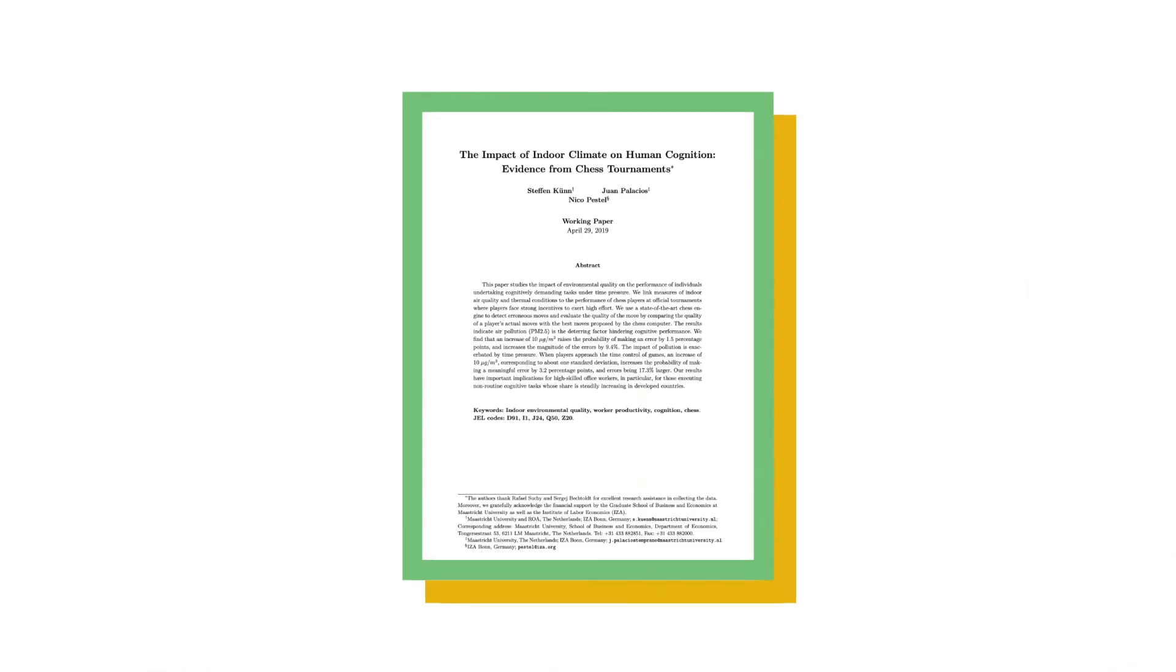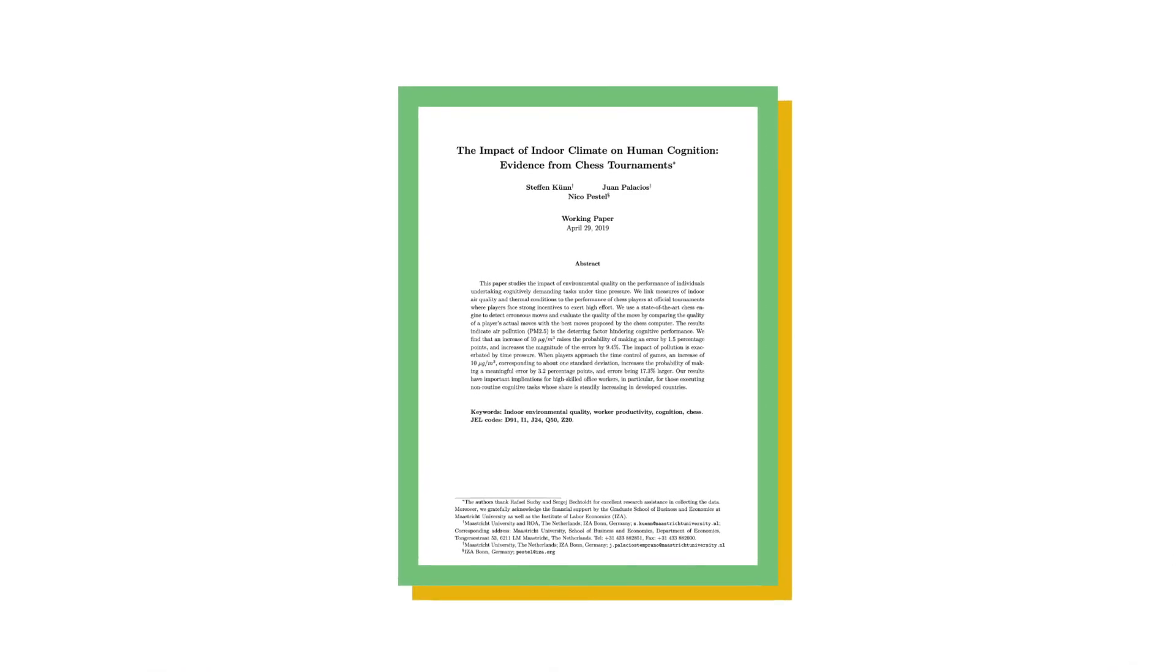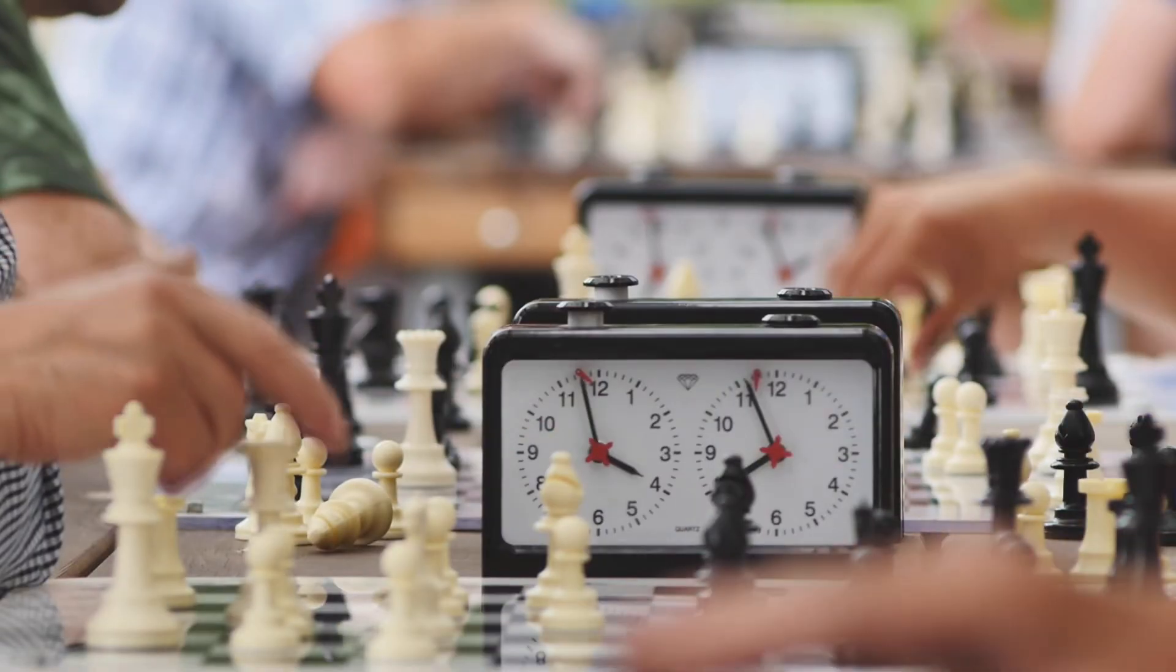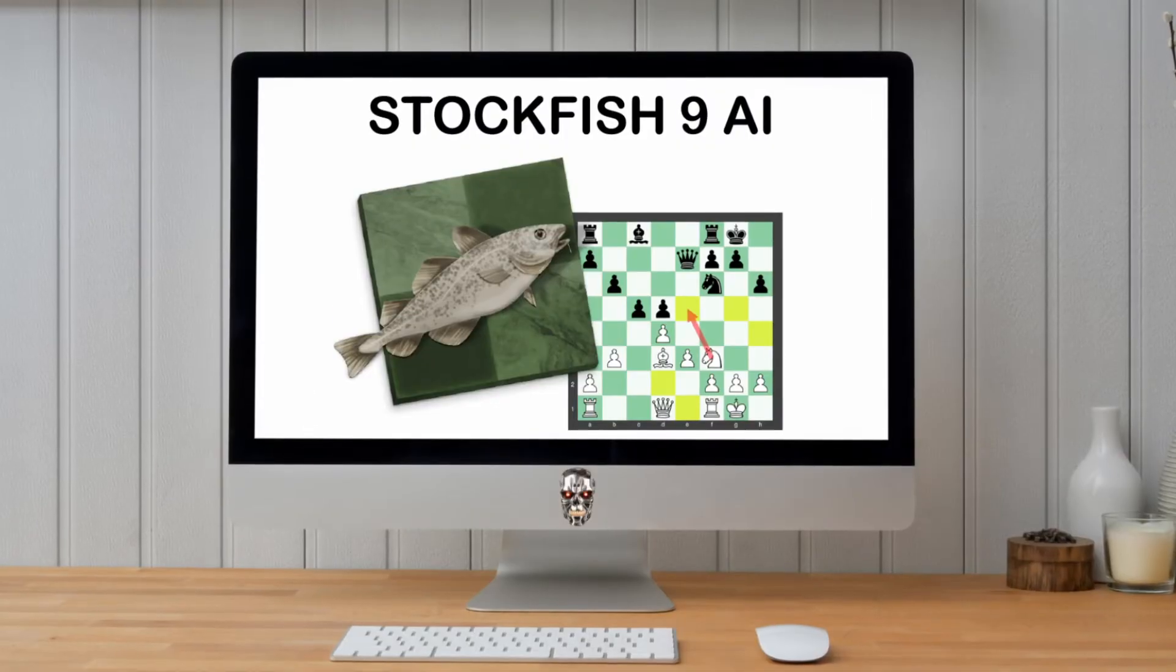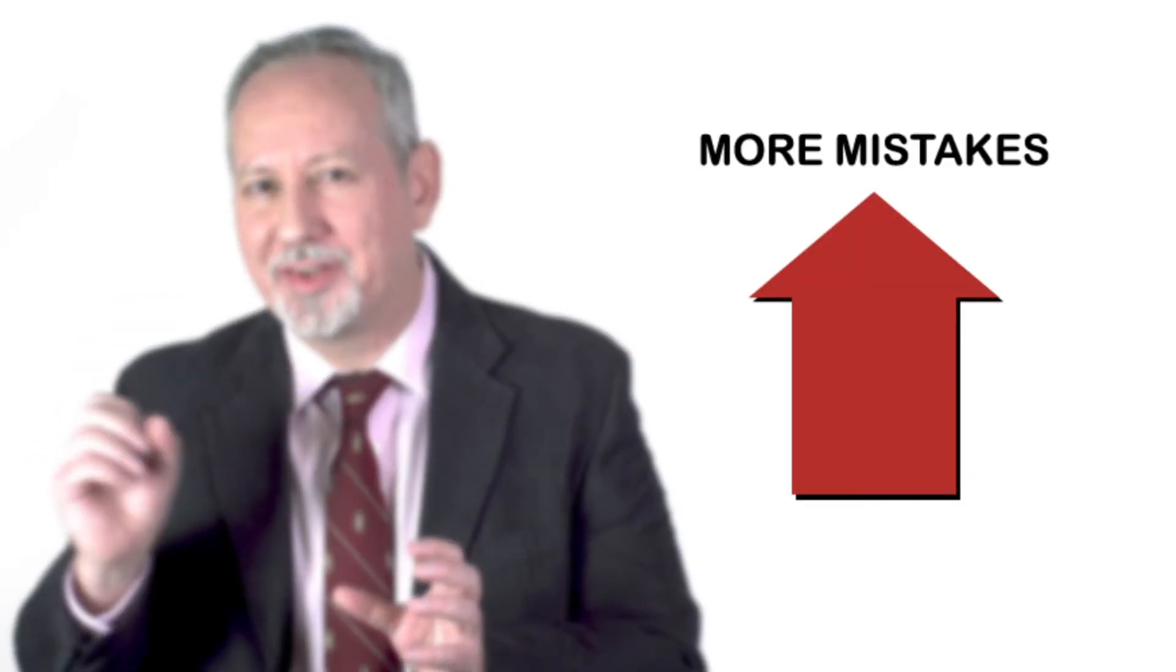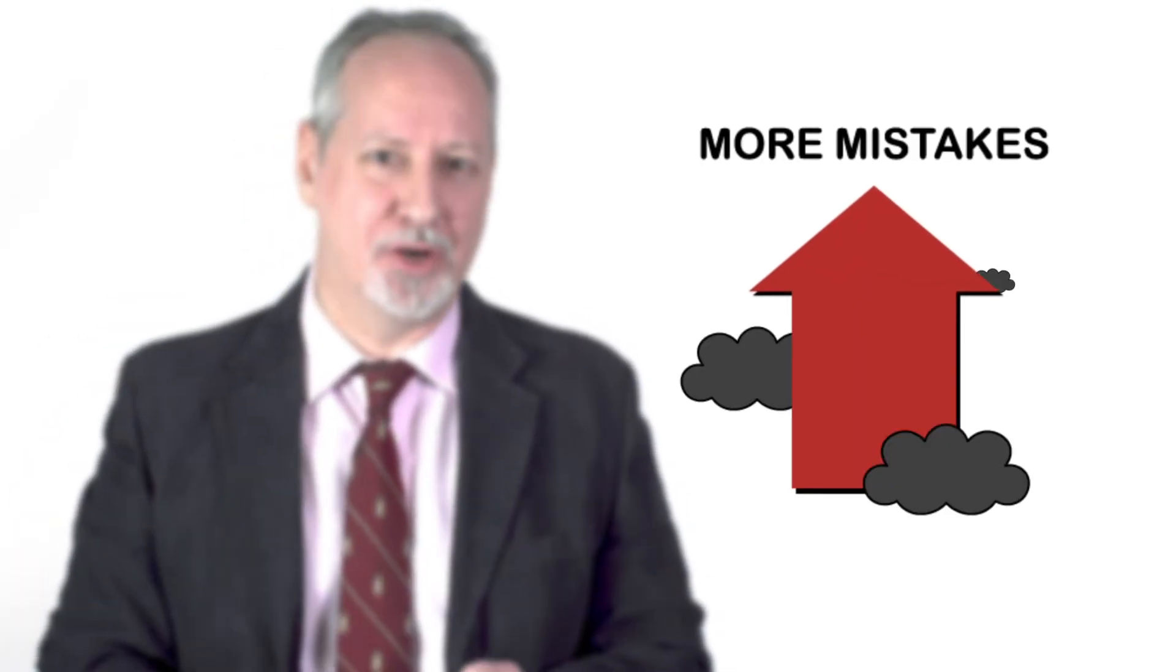Pollution, of course, doesn't just affect infants. Three economists measured pollution at a series of chess tournaments in Germany. They compared each player's moves with the moves that the player should have made according to the world's greatest player of chess. Magnus Carlsen? No. The Stockfish 9 AI. And what they discovered is that the human players made more mistakes on days with higher pollution.